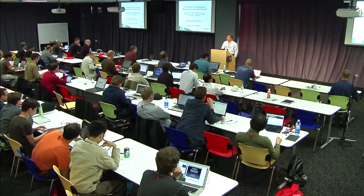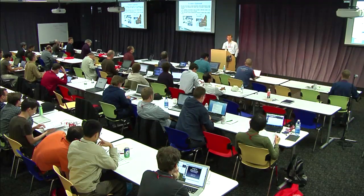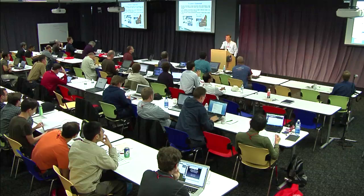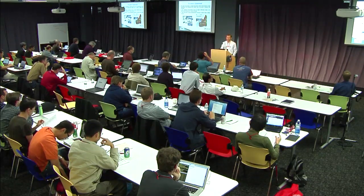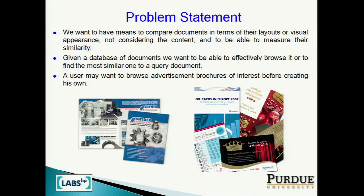I'm going to talk today about document visual similarity measures for document search. As for the problem statement, we want to have means to compare documents with respect to their visual similarity. We do not consider the content of the document — what the document talks about. We would rather like to compare layouts and images in the document, and have an algorithm that would enable us to find similar documents in a very large document dataset.